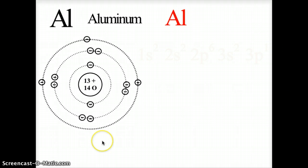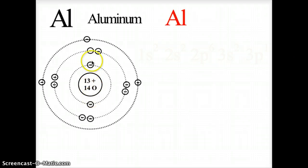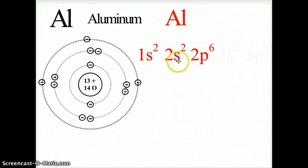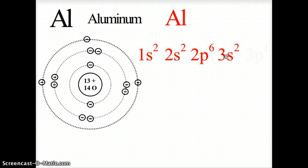Moving on to aluminum. Aluminum is in the third row of the periodic table and in the first column of the P block. It has two electrons in the first orbit, eight in the second, and three in the third. The first orbit is 1s2. The second orbit is 2s2 and 2p6 for eight electrons. The third orbit is 3s2 plus 3p1.